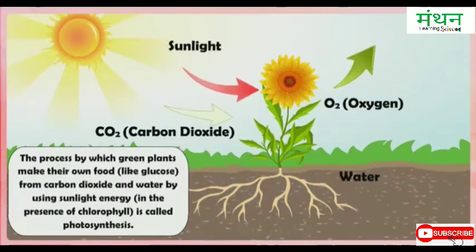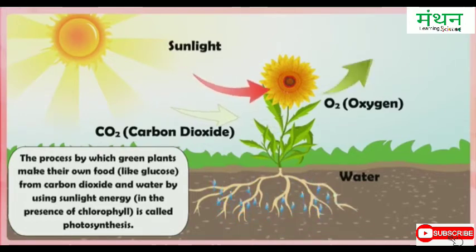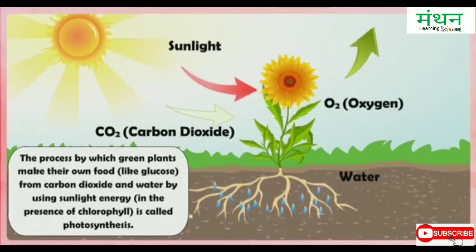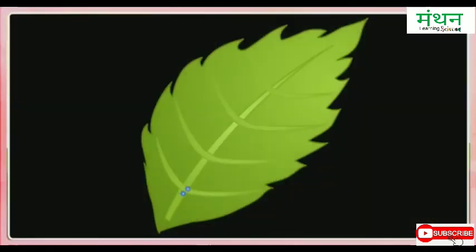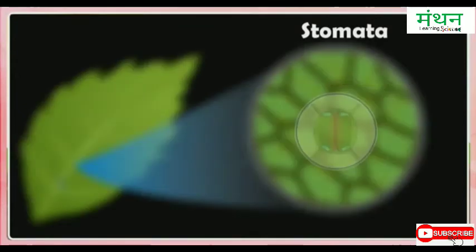Photosynthesis. The process by which green plants make their own food like glucose from carbon dioxide and water by using sunlight energy in the presence of chlorophyll is called photosynthesis. Plants take carbon dioxide needed for photosynthesis from the air through tiny pores called stomata present on the surface of leaves.